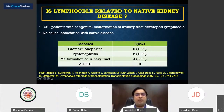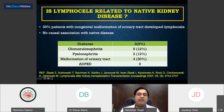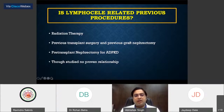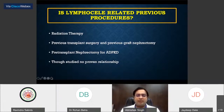When you consider all the native kidney diseases, diabetic kidney disease is the most common and has no relation whatsoever to formation of lymphoceles. But patients who have had some kind of congenital malformations have a high incidence of post-transplant lymphoceles — over 30% of such patients have an increased risk. There is no proven relationship with previous surgery, radiation therapy, graft nephrectomy, or pre-transplant nephrectomy such as for ADPKD; it can just be an incidental finding.